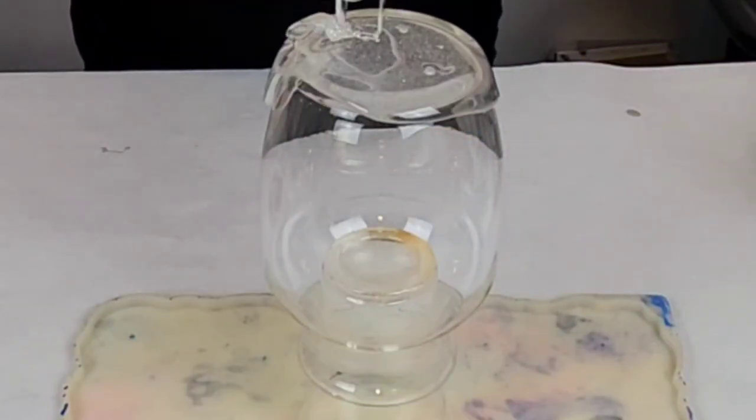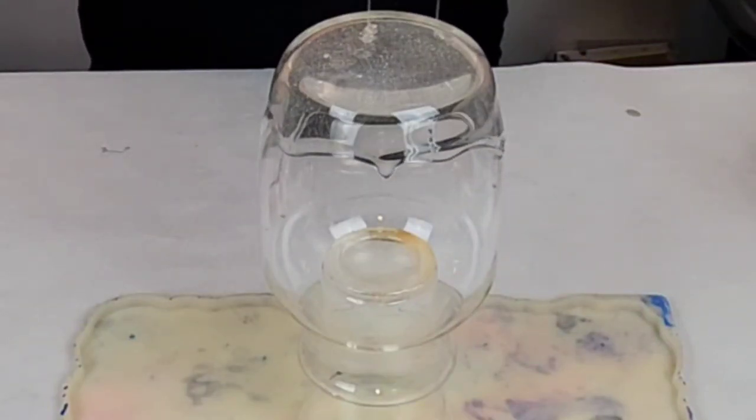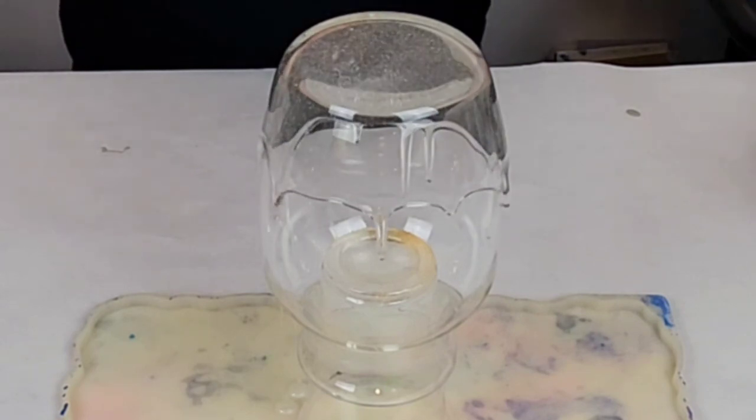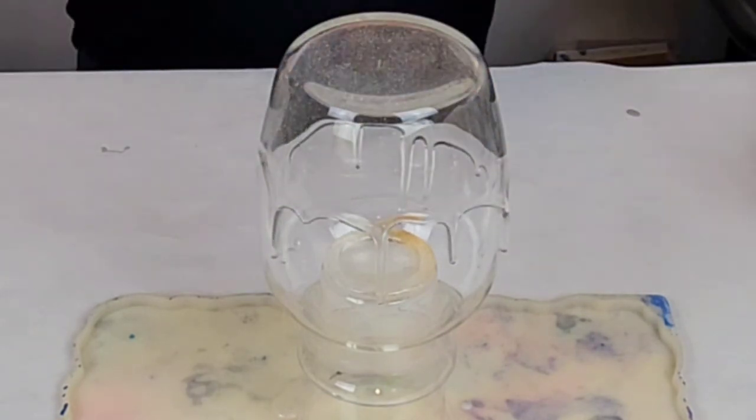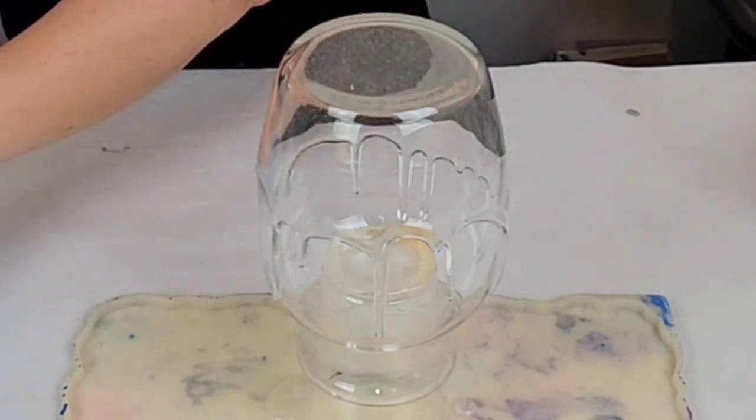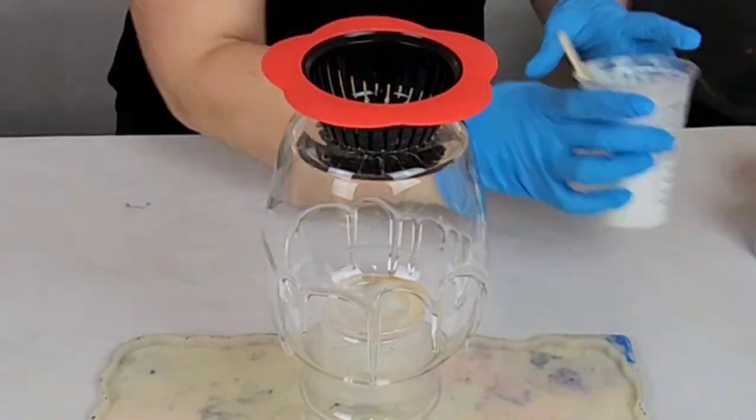Hey guys, Mixed Media Girl here. In this video I am doing a resin pour on a vase and hopefully you noticed but I have a silicone mold underneath to catch the runoff. This is a two-for-one project.